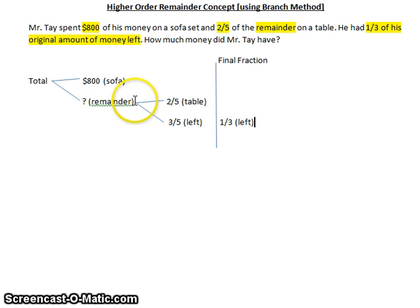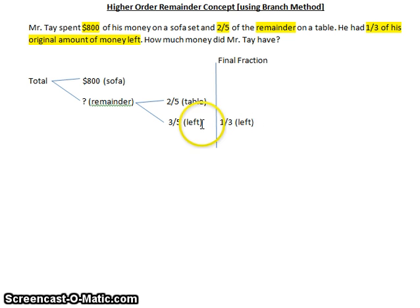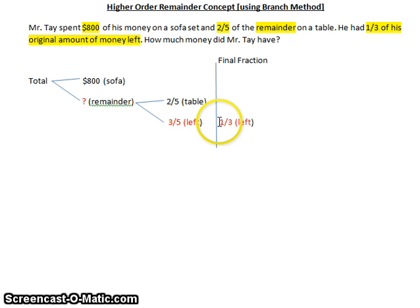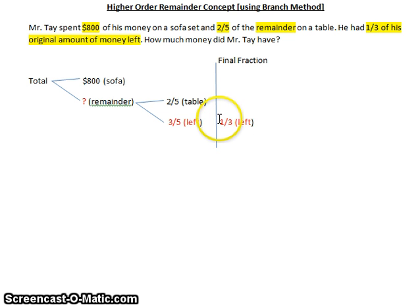We know that three-fifths of the remainder is the same as one-third of the original amount of money. We are going to use these two pieces of information — these two fractions — and work backwards to find what the question mark is. If I multiply the remainder by the fraction that's left it gives me the final fraction, so to get back the remainder I work backwards and divide instead of multiply.